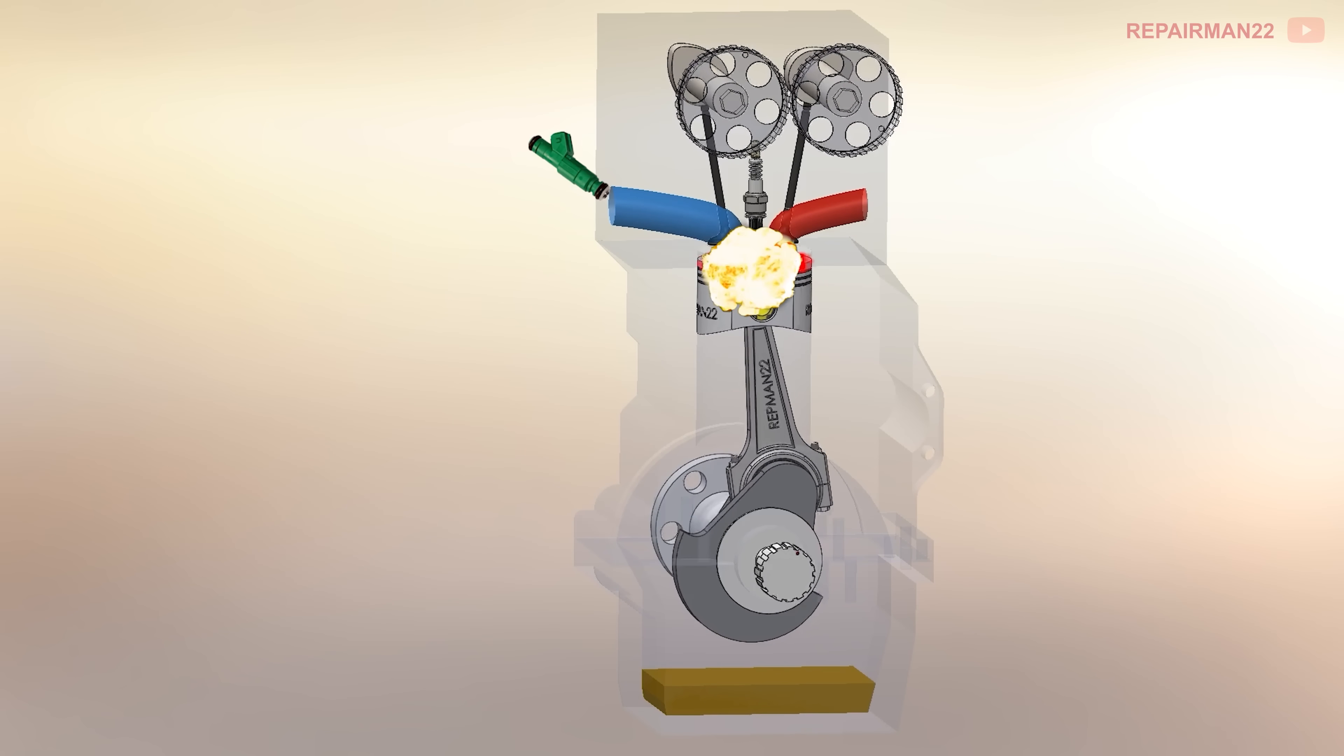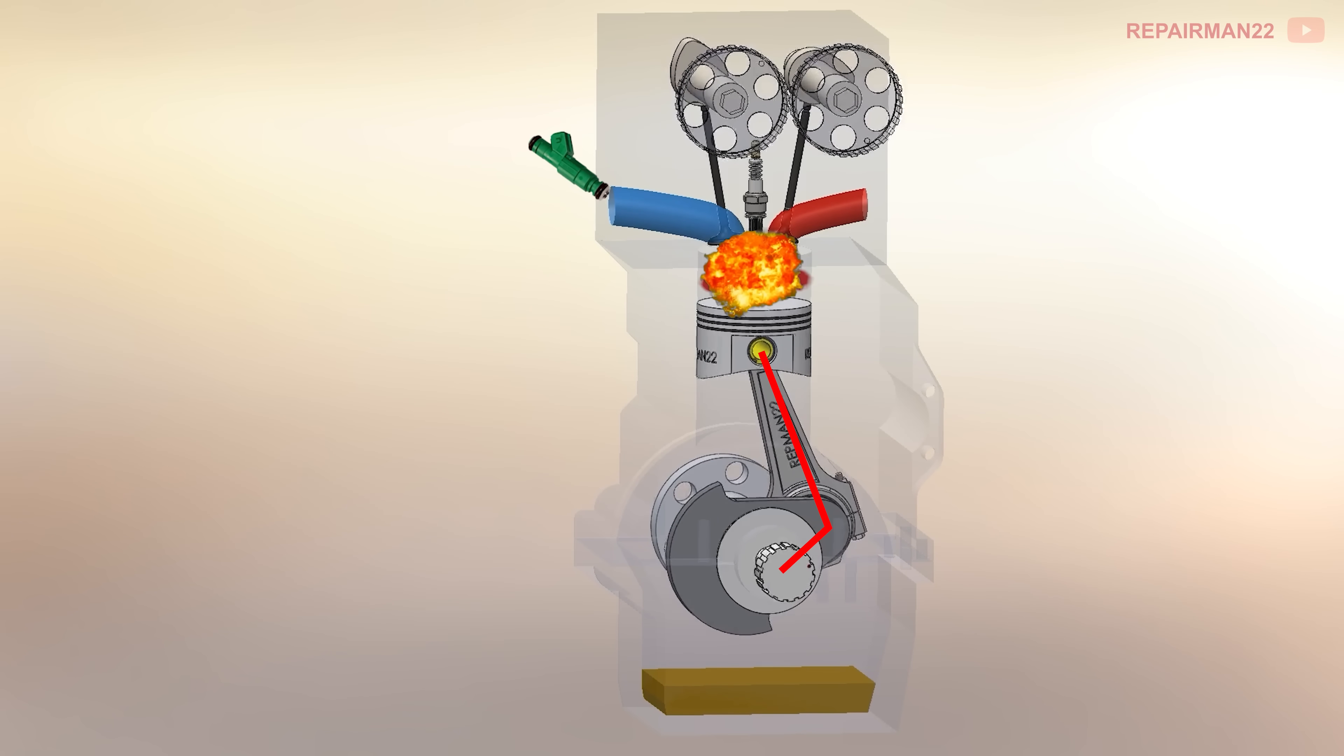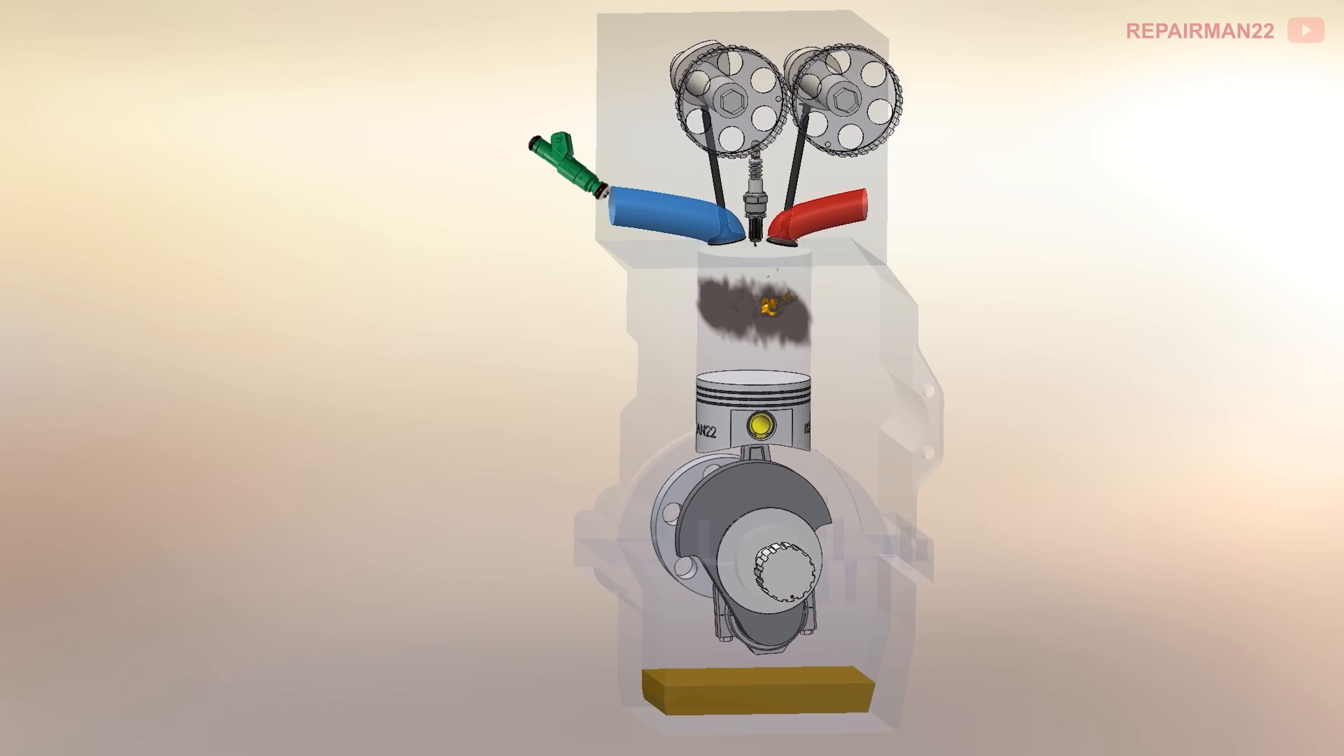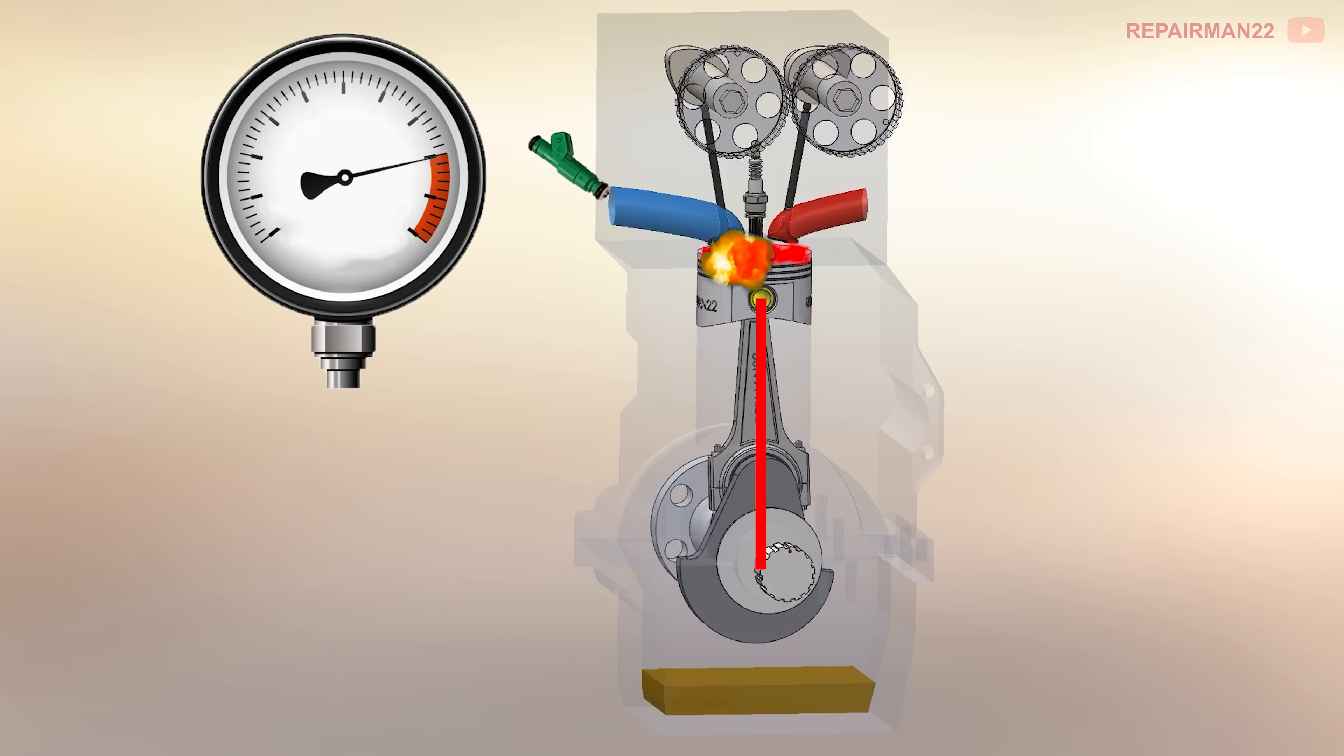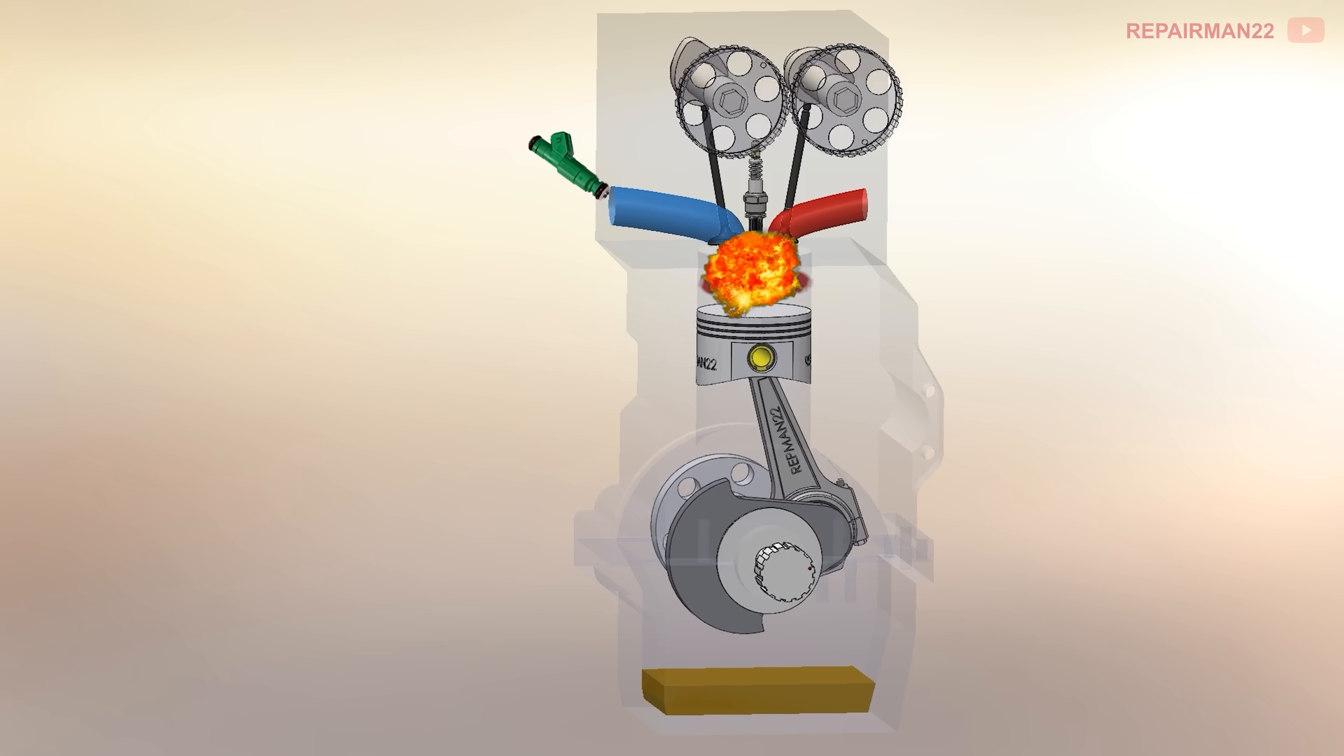This design eliminates the need for a connecting rod, which normally has to be tilted in order to produce torque. When the rod is perfectly vertical, it generates no thrust, precisely at the point where the combustion chamber is smallest and cylinder pressure is at its highest.